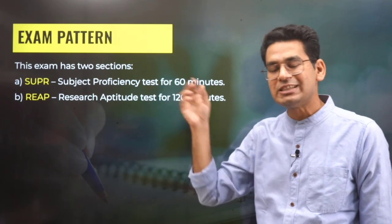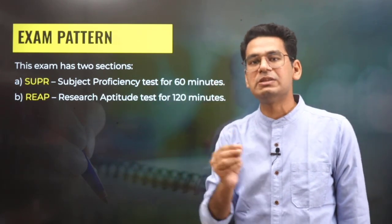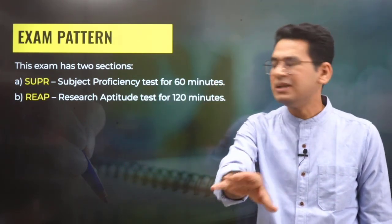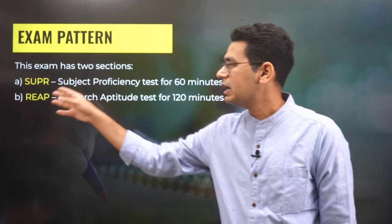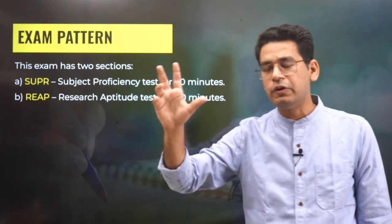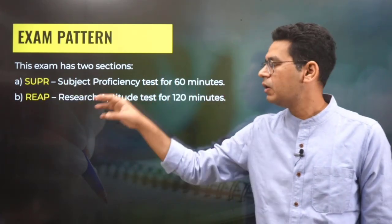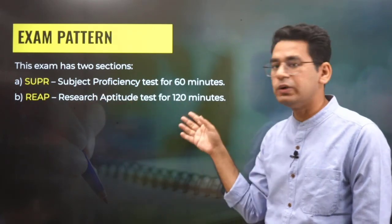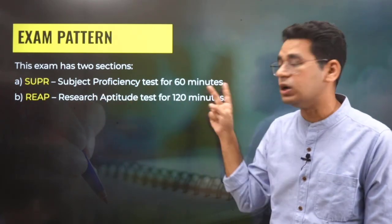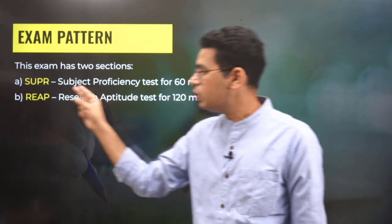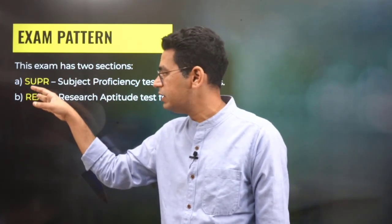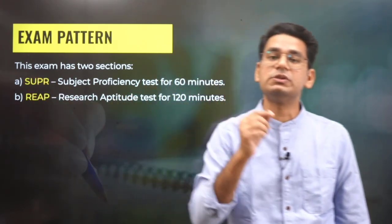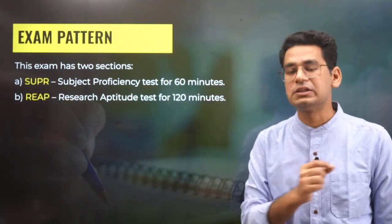Super is the Subject Proficiency Test, which covers physics, chemistry, and maths at JEE Mains level only. And REAP is a completely new kind of paper known as the Research Aptitude Test, which is 2 hours. The more weightage in the UG exam is given to REAP as compared to Super, and that is what you have to practice.